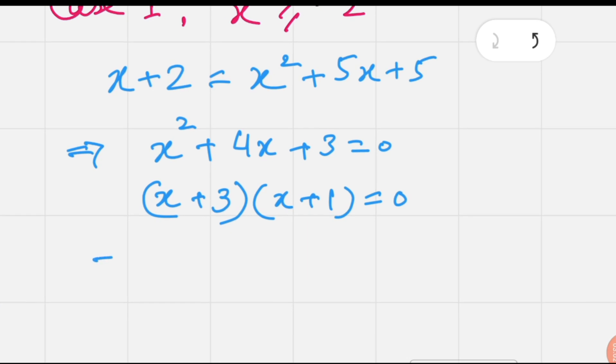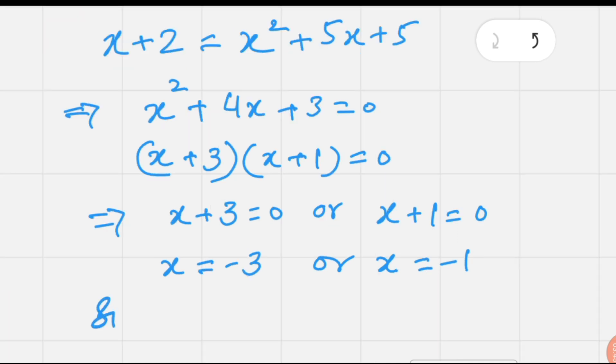The factors of this equation are (x + 3)(x + 1) = 0. Either x + 3 = 0 or x + 1 = 0, giving x = -3 or x = -1.